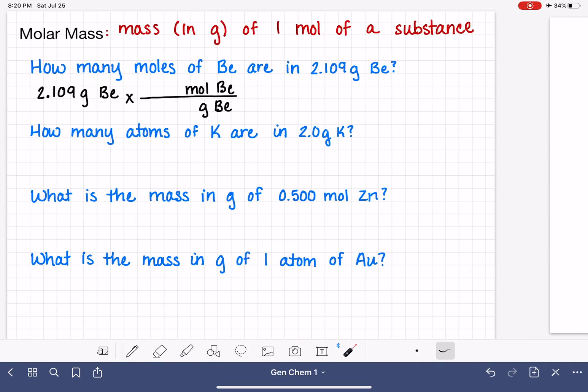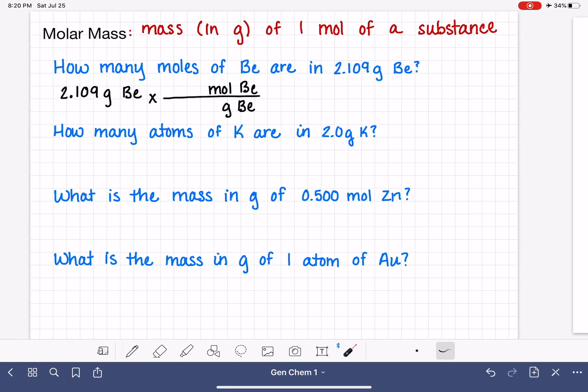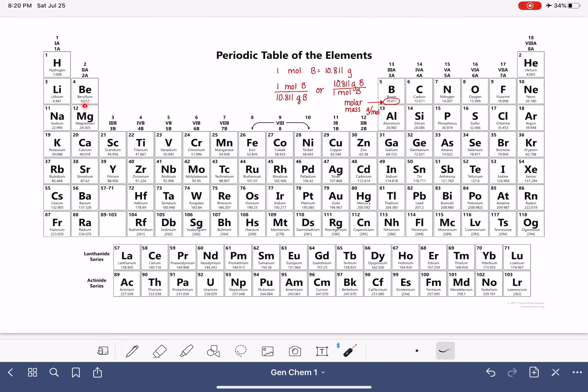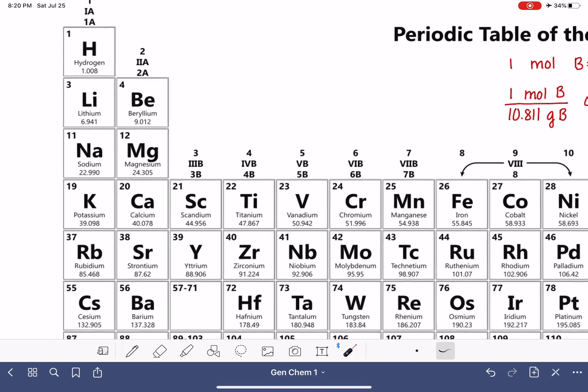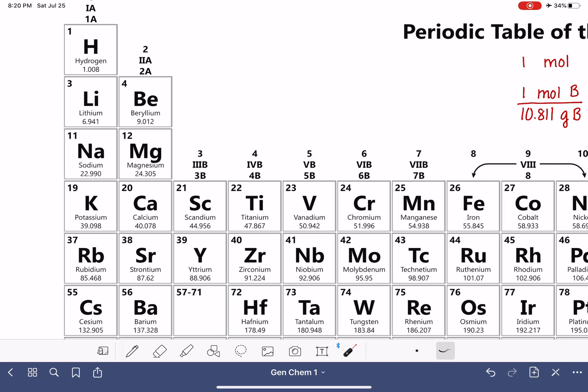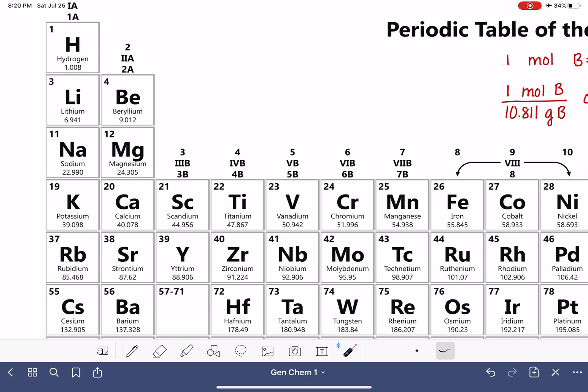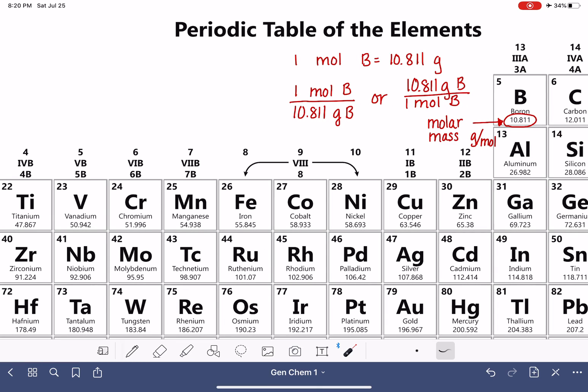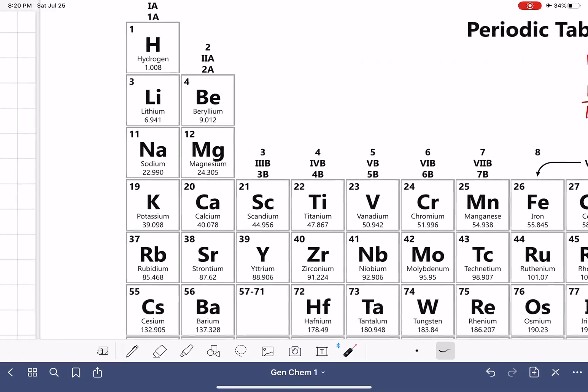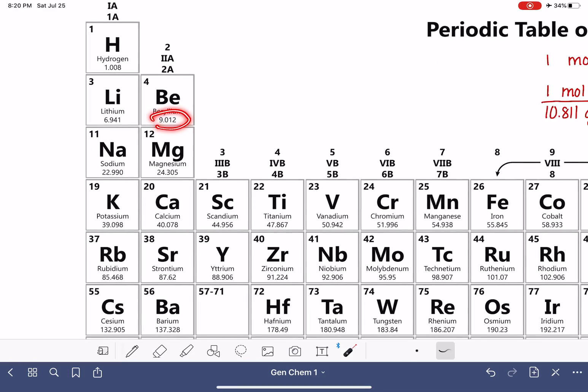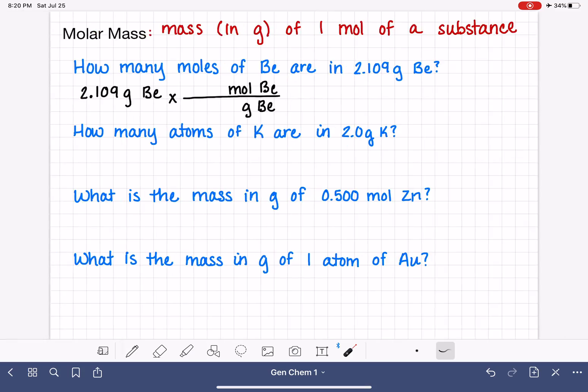And to do that, we're going to look at the periodic table. We're going to find beryllium. It's right here. Let me zoom in on it. The molar mass of beryllium is 9.012. And let's take a look over here just as a reference. One mole is that quantity. One mole of beryllium is 9.012 grams. So that means one mole of beryllium is 9.012 grams.